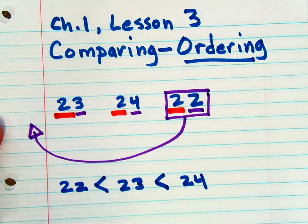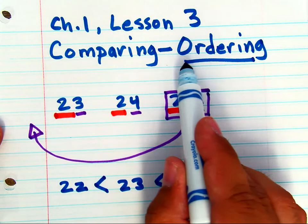So you're still comparing numbers, but you're using that comparing skill to order them.